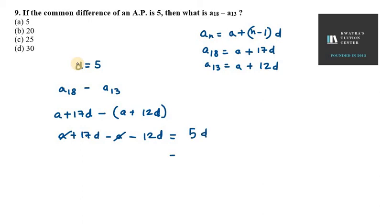5d, that means the common difference is 5 already, so we know the value of d, it is 5. So 5 into 5 is 25. So we get the value of a18 minus a13 as 25, that is option c.